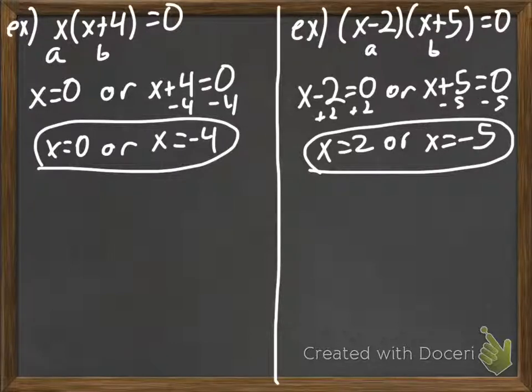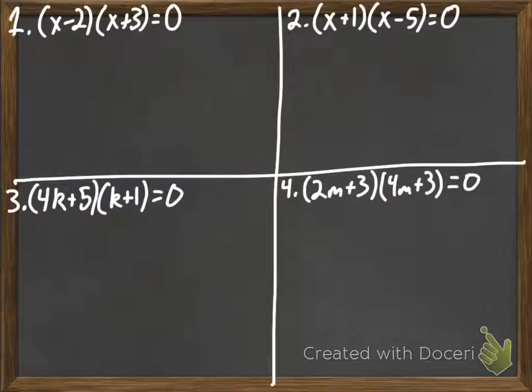So, that's using the zero product property on our quadratics that are already in factored form. So, here are four examples I want you to work on with your group. So, go ahead and pause the video and do that now.